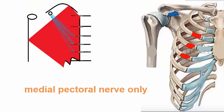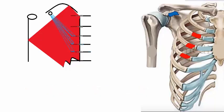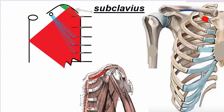Its nerve supply is from the medial pectoral nerve only, unlike the pectoralis major. As for its actions, it works mainly on the scapula — it pulls it forward (protraction) and depresses the scapula.